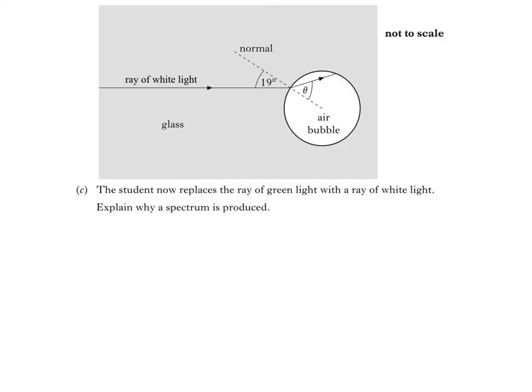Remember that white light contains a range of wavelengths, from red light with the largest wavelength and smallest frequency, to violet light with the smallest wavelength and greatest frequency.